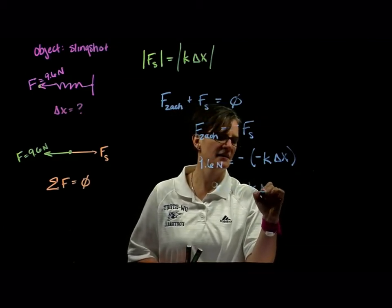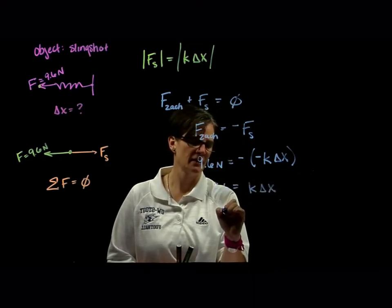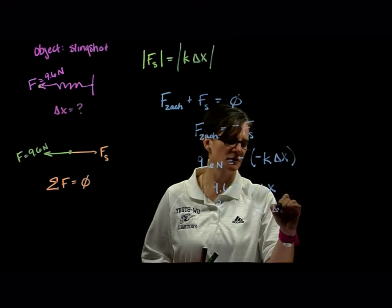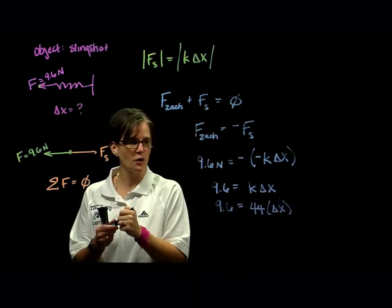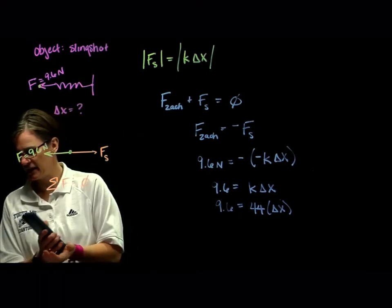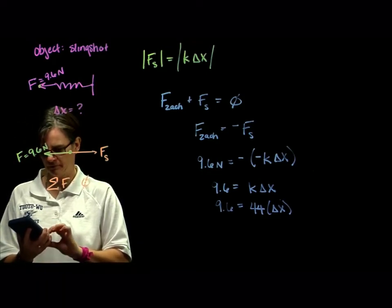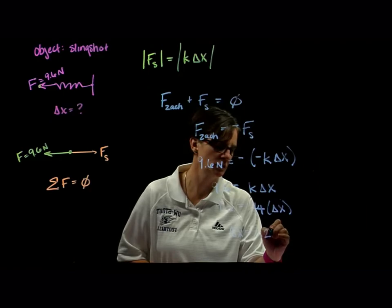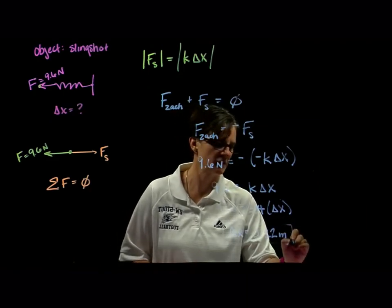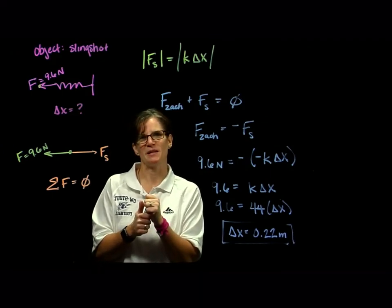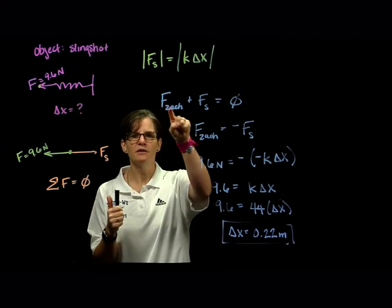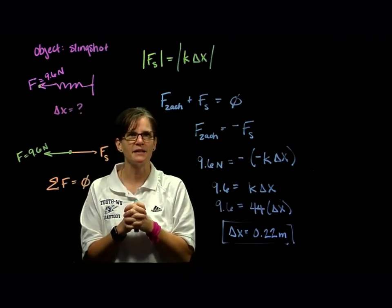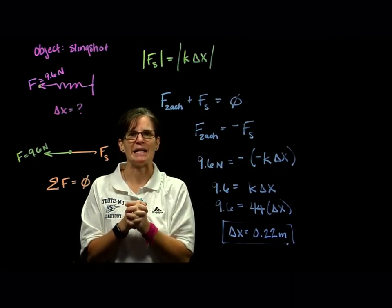So, 9.6 is equal to k delta x. Our k value is 44. We're interested in delta x, so 9.6 divided by 44 gives us a delta x equal to 0.22 meters. Zachary stretches the spring by 0.22 meters. This is really just practicing using that spring force relationship, recognizing that it's working in equilibrium, and we can see how much the spring is stretched.